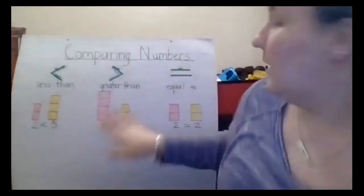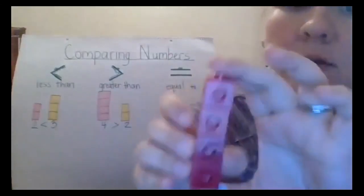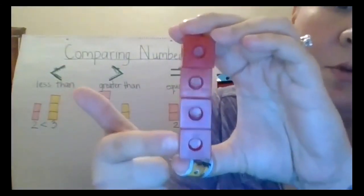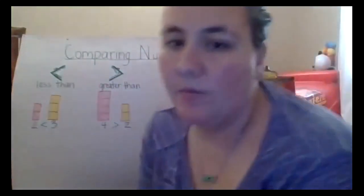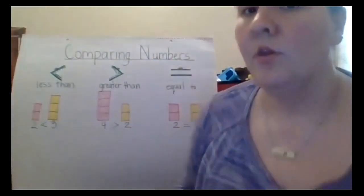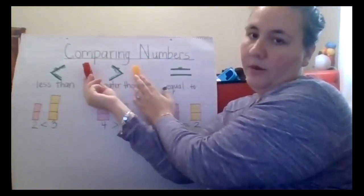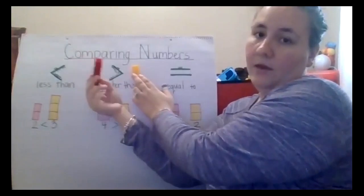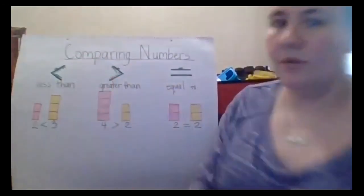For our next example, we have four red blocks. We can count them together — remember, we count and touch at the same time. One, two, three, and four. So we have four red blocks. And then we have two yellow blocks — one, two. If I put these up, my alligator wants to chomp the bigger number. So the red blocks are greater than or more than my yellow blocks for this one.